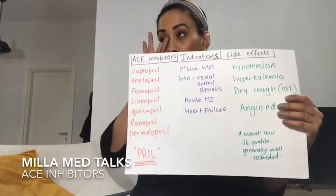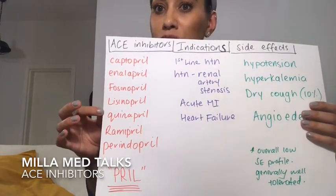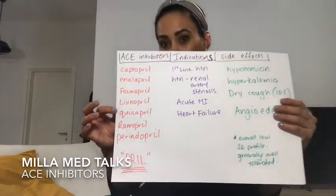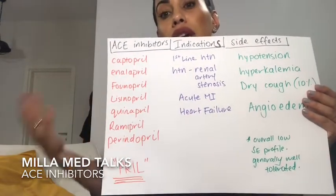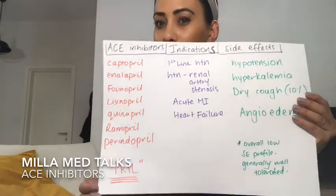Depending on what country you're in, each country slightly has different ones. The main ones are captopril, enalapril, fosinopril, lisinopril, quinapril, ramipril, and perindopril. In Australia, for instance, we commonly see doctors prescribing mainly ramipril and perindopril. These are the most common ones, and obviously dependent on the patient and their needs, their current blood pressure, and their target. The indication will depend on what dose we give them, along with other considerations like renal function. There are many factors to consider when selecting which one is correct and what dose is correct.